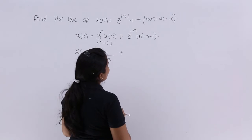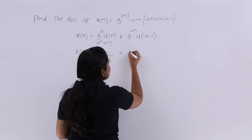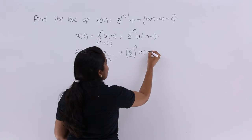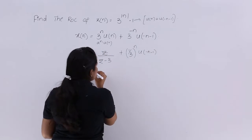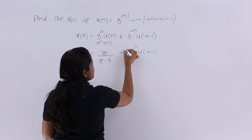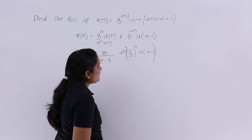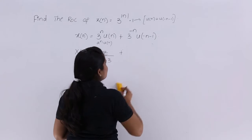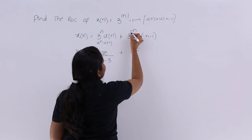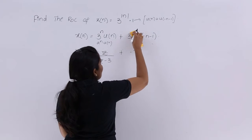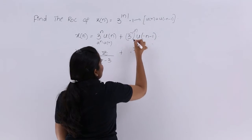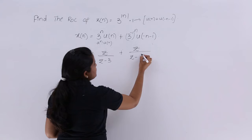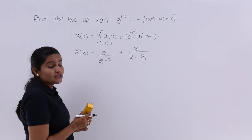Whenever you are having 3^(-n) · u(-n-1), I can also write it as (1/3)^n · u(-n-1). In this case, considering the Z-transform, I will get Z/(Z - 1/3). So if I write 3^(-1) whole power n · u(-n-1), this is equal to Z/(Z - 1/3). I am writing 3 inverse as Z/(Z - 1/3).